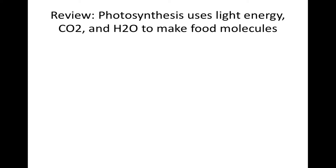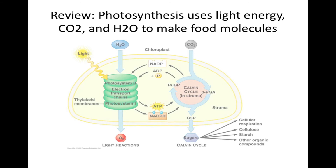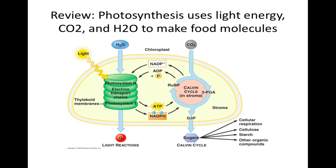Review: photosynthesis uses light energy, carbon dioxide, and water to make food molecules. The photosystems transfer photo-excited electrons through electron transport chains, where energy is harvested to make ATP and NADPH. The chloroplast's sugar factory, the Calvin cycle — the second stage of photosynthesis — occurs in the stroma, where the enzyme rubisco combines carbon dioxide with RuBP. ATP and NADPH are used to reduce 3-PGA to G3P.